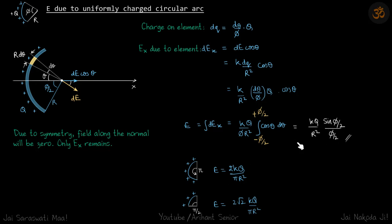Now, if the arc is a semicircle, then the angle φ is π. If you put π here, you will get 2kq/(πr²). And if you take a quarter of a circle,